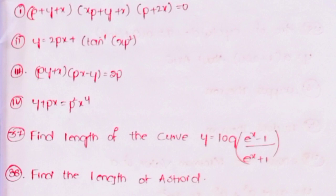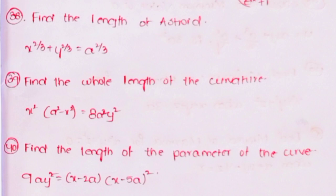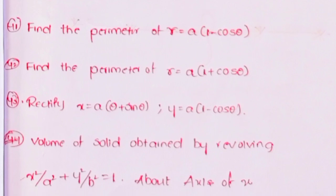Thirty-seventh, find the length of the curve y = log[(eˣ − 1)/(eˣ + 1)]. Thirty-eighth, find the length of the asteroid x^(2/3) + y^(2/3) = a^(2/3). Find the whole length of the curve x²(a² − x²) = 8a²y². Forty-first, find the perimeter of r = a(1 − cosθ). Forty-second, find the perimeter of r = a(1 + cosθ). Forty-third, rectify x = a(θ + sinθ), y = a(1 − cosθ).